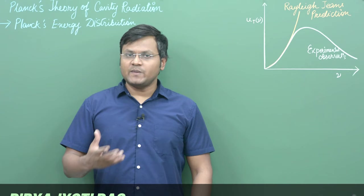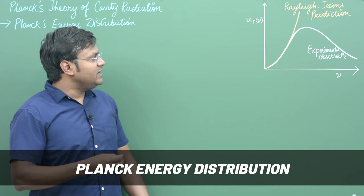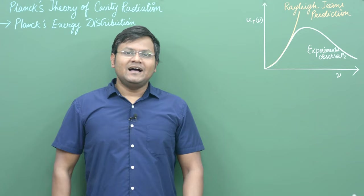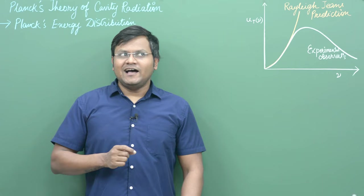Hi everyone, welcome back. This is Part 3 of blackbody radiation spectrum. In today's video we are going to talk about how Max Planck provided a resolution to the ultraviolet catastrophe problem and how he provided an explanation to the experimental observations of blackbody radiation. More importantly, in doing so he would prove that some of our deeply held beliefs about classical physics are wrong.